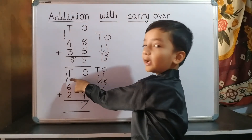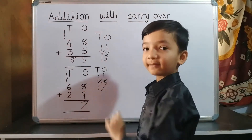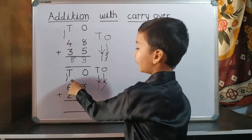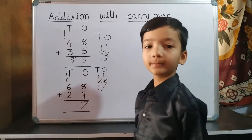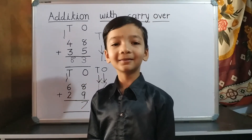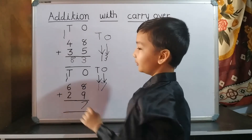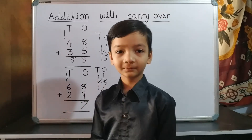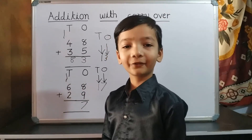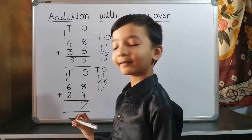Now we do addition of ten's place. 1 plus 6 equals 7. 7 plus 2 equals 9. So we write 9 on ten's place. 97 is our answer.